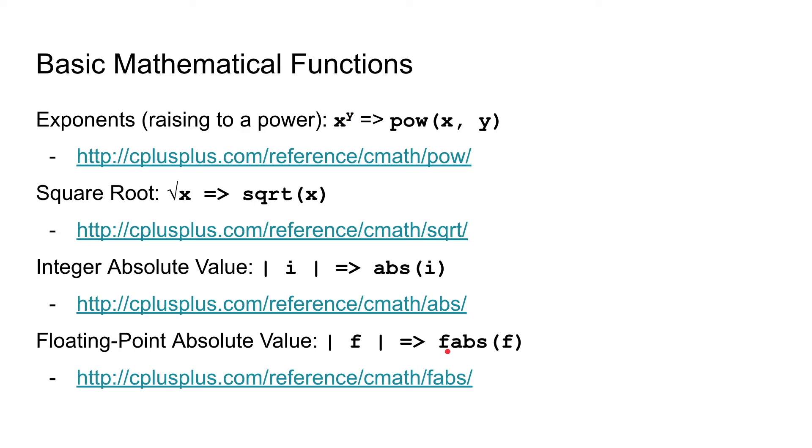If it is floating point numbers that we're working with, then we use the floating point absolute value function. The difference is there is an f in front of the absolute. So you get abs and fabs, or floating point.